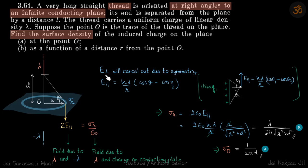We saw that E perpendicular will cancel out from these two charges and E parallel will remain, and that value will be k lambda by r times (cos theta minus cos theta_2).